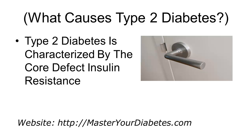Type 2 diabetes refers to two main defects: insulin resistance in your muscle, fat, and liver tissues, which means your cells can't get insulin — the key that unlocks the door of the cell to let sugar in — and the pancreas not secreting insulin properly.